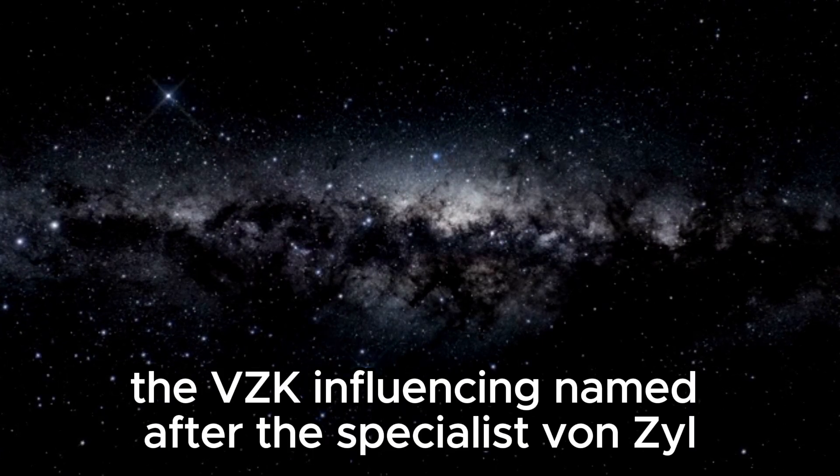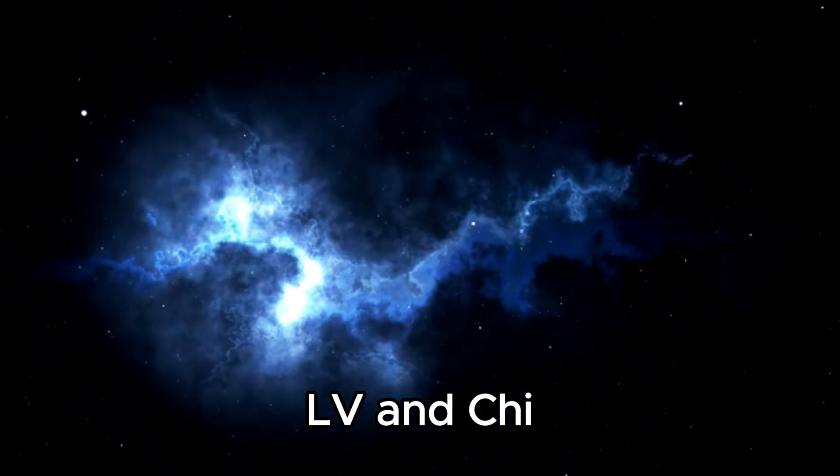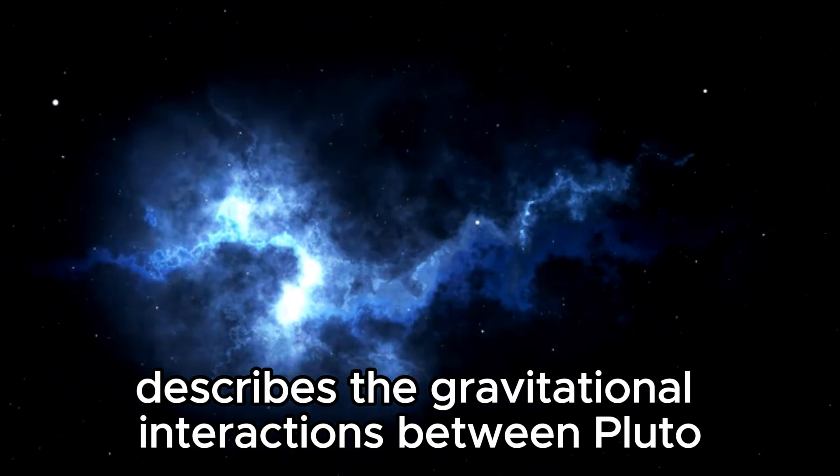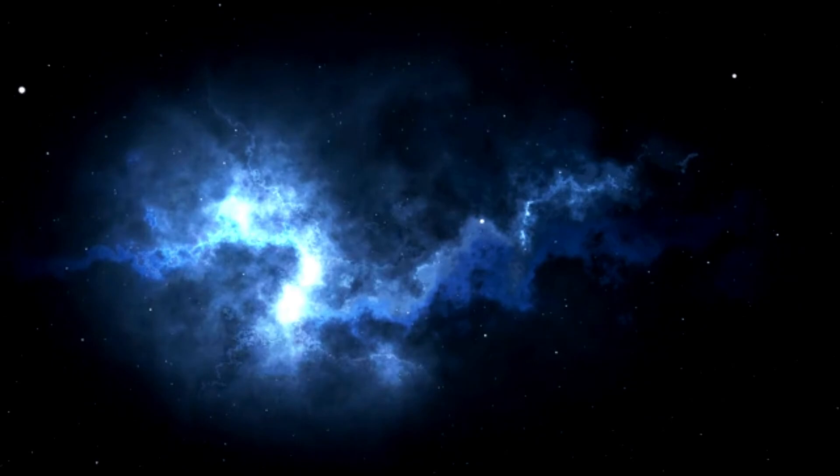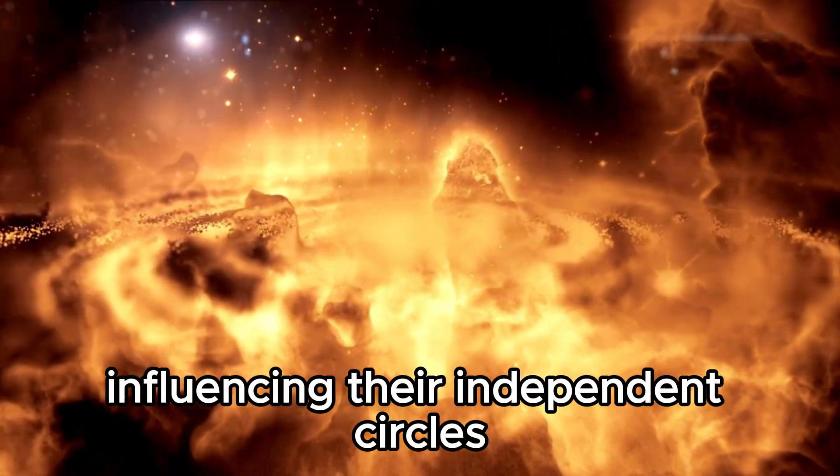The VZK influencing, named after the specialists Von Zial LV and Kai, describes the gravitational interactions between Pluto, Neptune, and the Sun, influencing their independent circles.